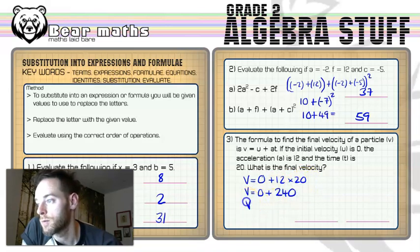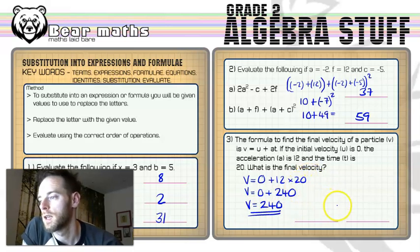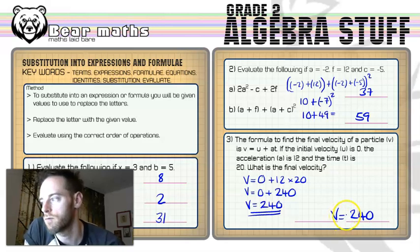And then pop that 0 back on, and 0 plus 240 is 240. So we found the value of V, the final velocity, is V is equal to 240. So I hope you'll agree that that's actually relatively simple.